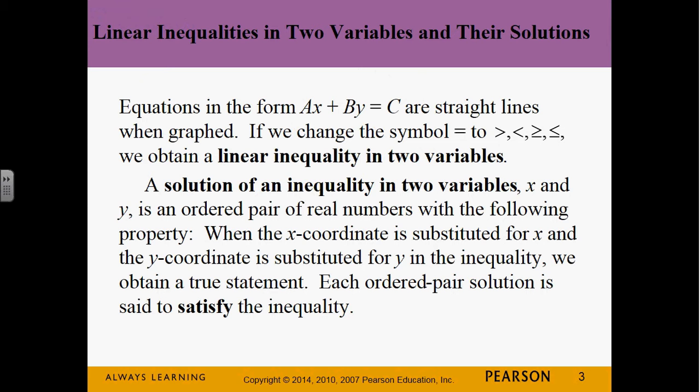A solution to an inequality, when you've got x and y, is going to be an ordered pair that makes it a true statement. If I plug in the x and the y value, I should get something like 2 is less than 3, or negative 47 is less than 813 — as long as it's a true statement, it is a solution. Every inequality in two variables is going to have infinitely many solutions.